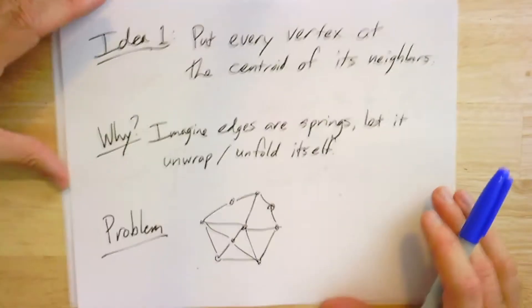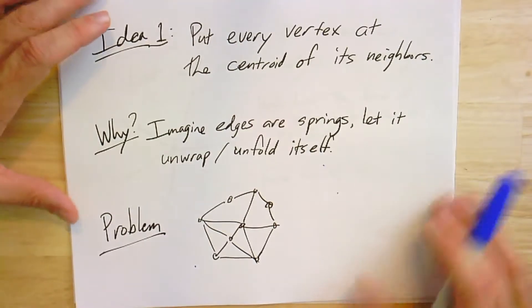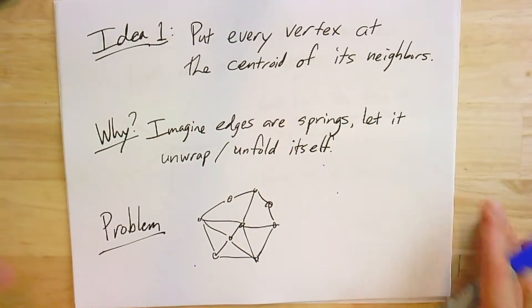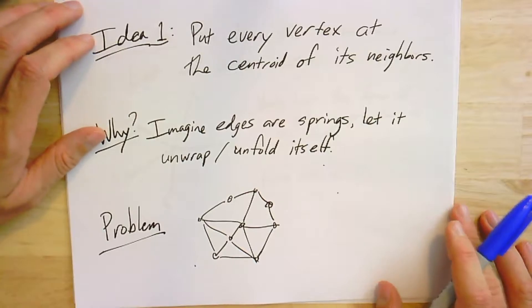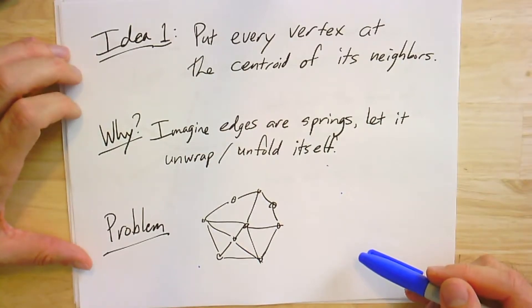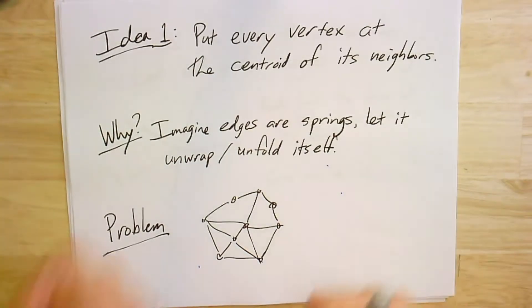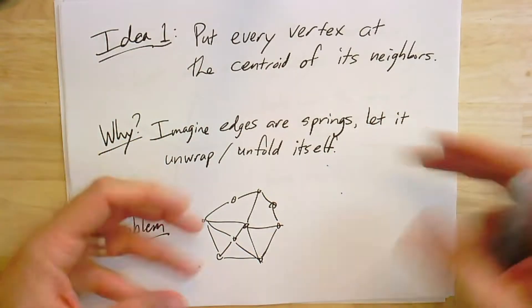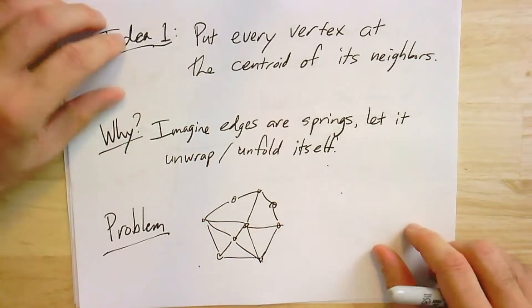All right, so how do we find an embedding in which every face is a nice convex polygon? And so one cool idea is you just put every vertex at the centroid of its neighbors. And the reason you might think this is a good idea is that if all the edges were springs, you might hope that it unwraps itself.